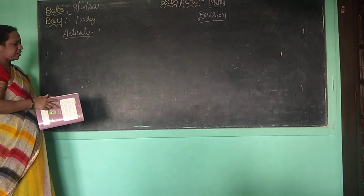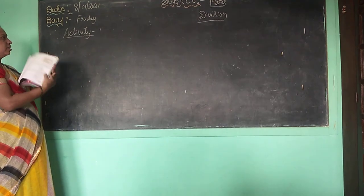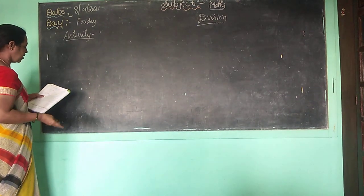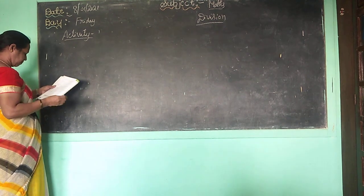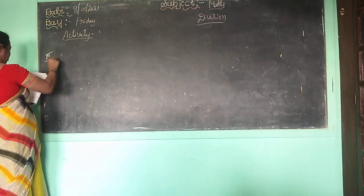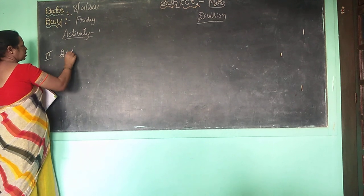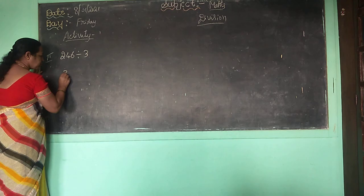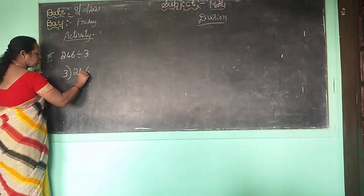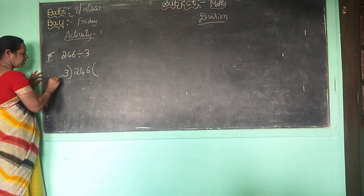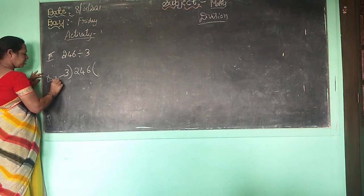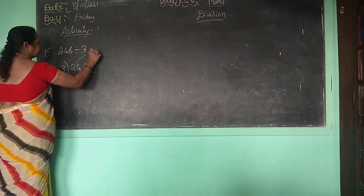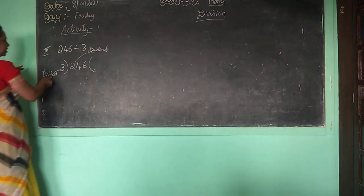Open page number 42 in your textbook. Divide using the long division method — that is the second method. For 246 divided by 3, you know how to put the symbol. In division, this is the divisor, and this is the dividend.